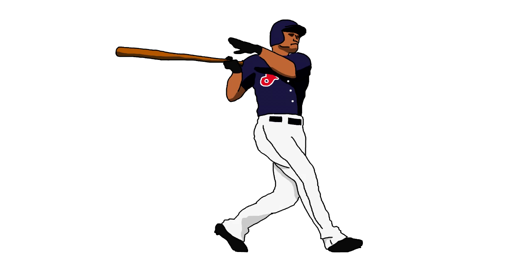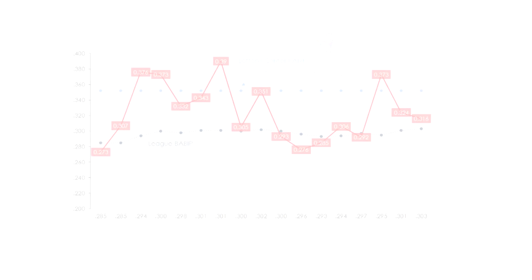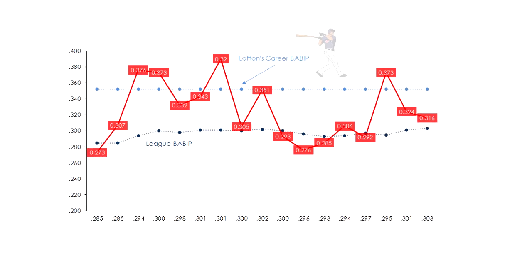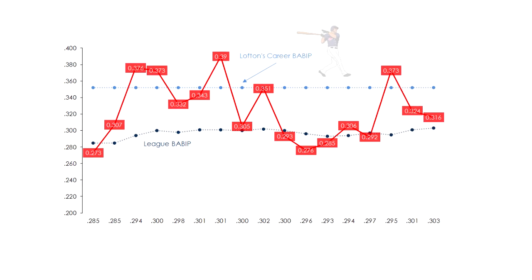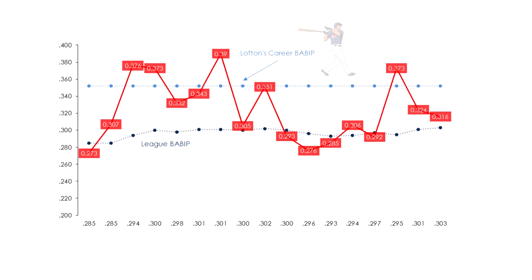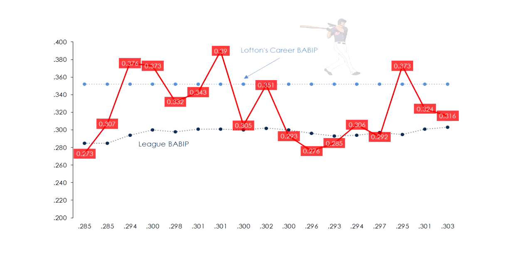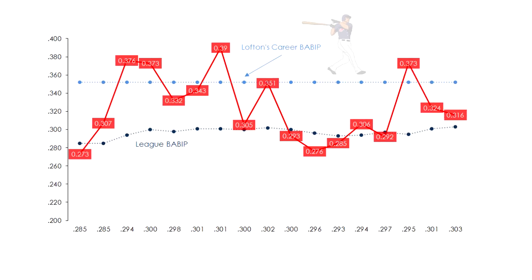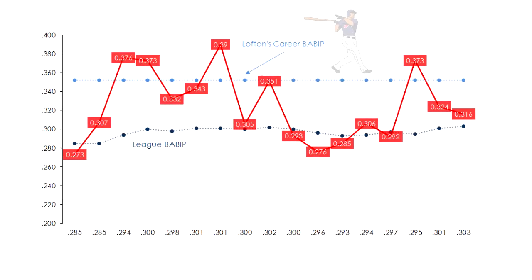Meanwhile, Mr. Kenny Lofton produced via singles, doubles, walks, and steals, but hit homers infrequently. In order to be productive with his skill set, he needed a career BABIP in the mid-320s.